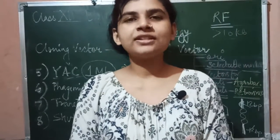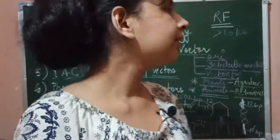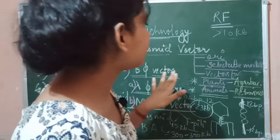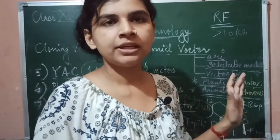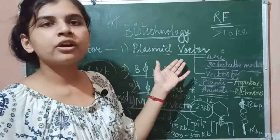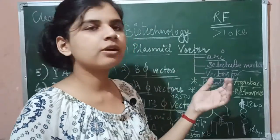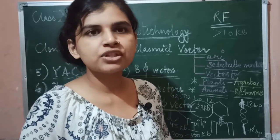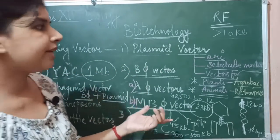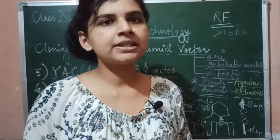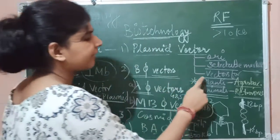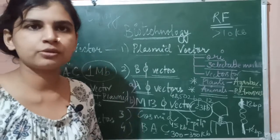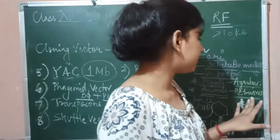Hello everyone, welcome to Easy Biology. This is Pooja Maurya. In the last class we were discussing cloning vectors. We talked about plasmid vectors — we have seen there is an origin of replication (ori). In prokaryotes we have one ori and in eukaryotes we have multiple oris. We also talked about the selectable marker: certain antibiotics present in the plasmid which help recombinants or transformants to get selected. For plant vectors we generally use Agrobacterium tumefaciens, and for animals we can use retrovirus as a vector.